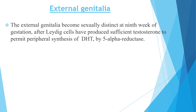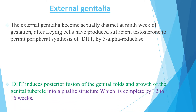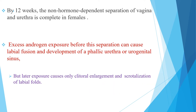Regarding external genitalia development, the external genitalia become sexually indistinct at the ninth week of gestation, after Leydig cells have produced sufficient testosterone to permit peripheral synthesis of dihydrotestosterone (DHT) by 5-alpha reductase. DHT induces posterior fusion of the genital folds and growth of the genital tubercle into a phallic structure, which is complete by 12 to 16 weeks. By 12 weeks, the non-hormone-dependent separation of vagina and uterus is complete in females. Excess androgen exposure before this separation can cause labial fusion and development of a phallic urethra or urogenital sinus, while later exposure causes only clitoral enlargement and scrotalization of labial folds.